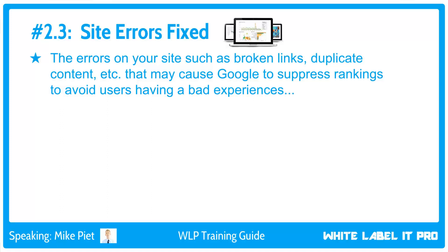Site errors can include broken links, duplicate content, thin content, etc. From Google's thinking, if the site has these errors, the user may have a bad experience. The user may then blame Google for showing them that site, Google gets a bad rep, fewer people come back, and Google makes less money from ads. So Google doesn't want to take the risk of putting a site with errors in the top position — they want sites most likely to give the user a good experience.